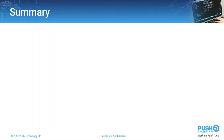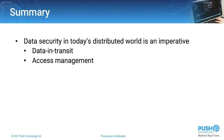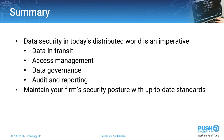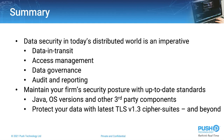To close, we have ascertained that security has become an imperative in today's increasingly connected yet distributed world. Data in transit: ensuring private, safe communication via TLS 1.3. Access management: provisioning who can access your platforms and when. Data governance and audit reporting: controlling what content each user can access down to the finest level, and monitoring usage for ongoing reporting. Keeping your firm up to date with the most secure technologies — including Java, operating system versions, or any other third-party components — and protecting your data with the latest TLS 1.3 cipher suites and beyond when TLS 1.3 itself becomes legacy.